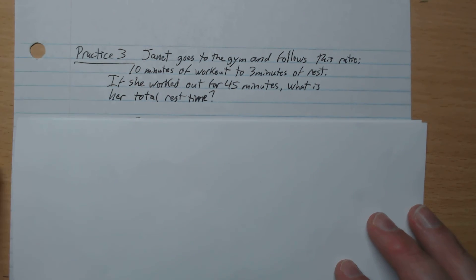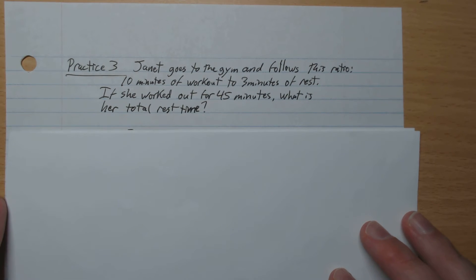Practice number three: Janet goes to the gym and follows this ratio, 10 minutes of workout to 3 minutes of rest. If she worked out for 45 minutes, what is her total rest time? Go ahead and pause the video and answer that.